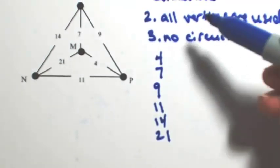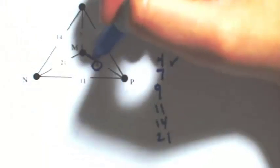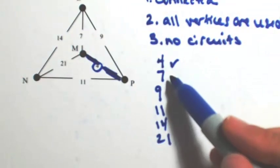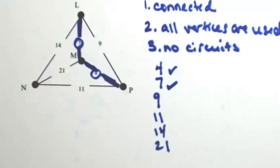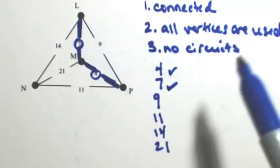So I'm going to start with the least cost one, which is going to be the 4. If I use the 7, I'm not going to create any circuits, so that one's fine. If I use the 9, I'm going to create a circuit, so we're not going to use that.